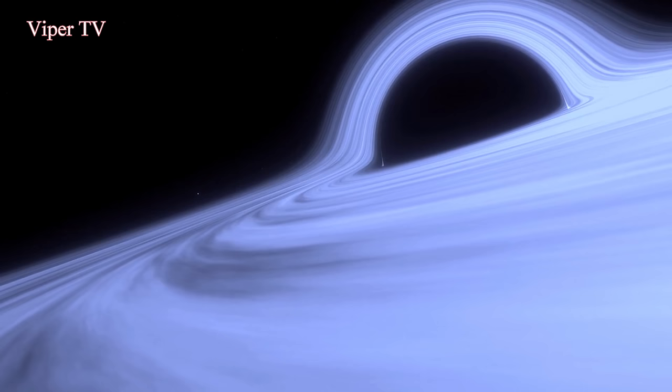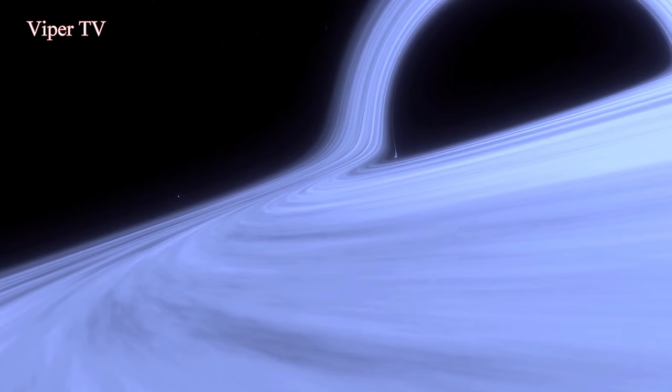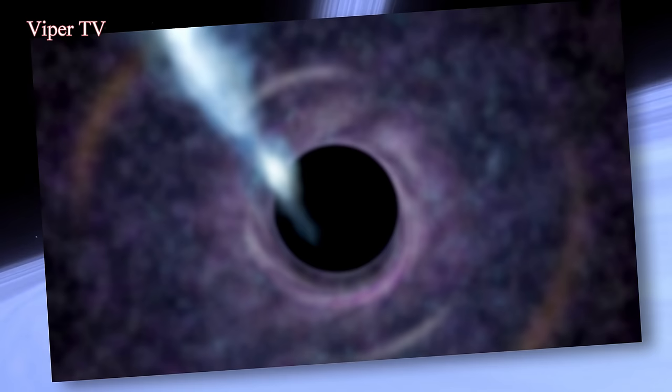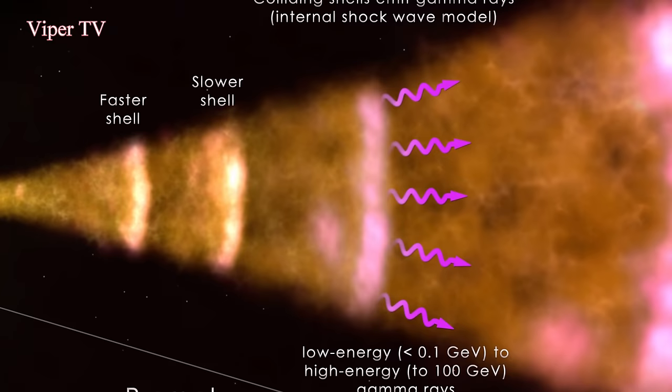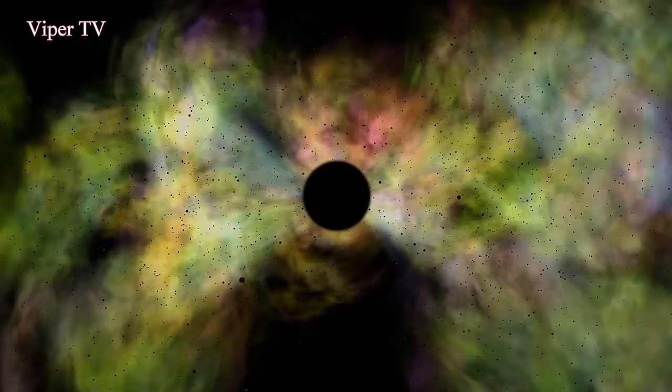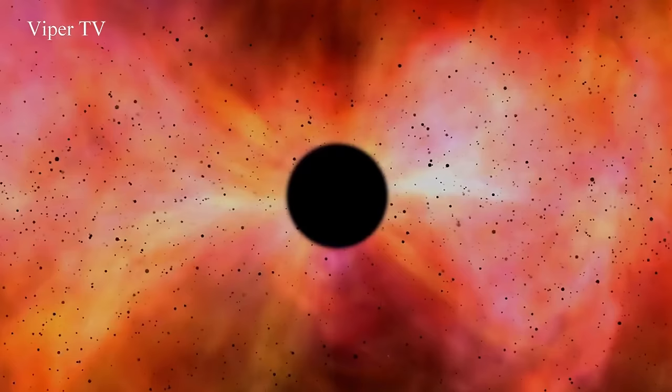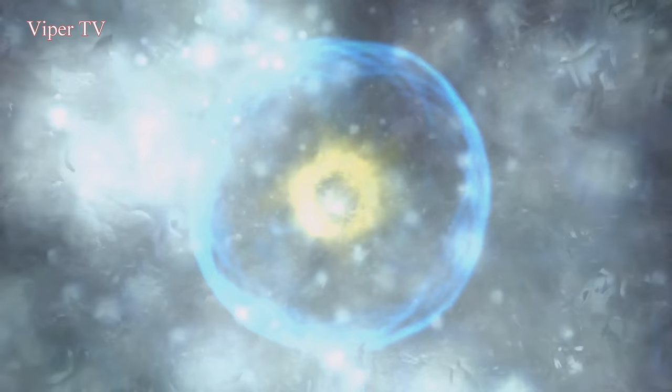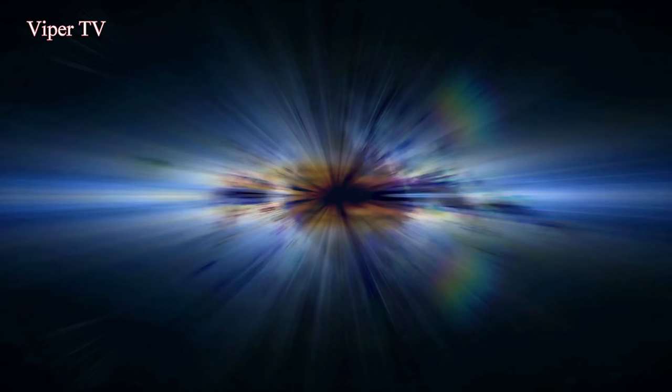Although black holes are famous for pulling material toward them, they often expel prodigious amounts of material and energy. This happens when matter falling toward the black hole is redirected into jets or beams that blast outward into space and slam into any surrounding material. Astronomers need to combine the X-ray information along with the radio data in order to clinch this finding. They discovered that a cavity in the hot gas, first seen in the Chandra data in 2016, was filled almost perfectly with radio emission created by electrons that had been accelerated to nearly the speed of light.